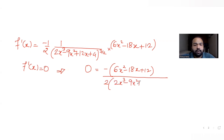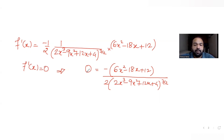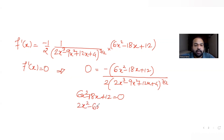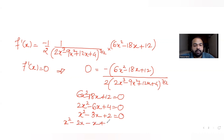Multiplying both sides by the denominator, only the numerator needs to equal zero. So 6x² minus 18x plus 12 equals 0. Taking 3 common gives 2x² minus 6x plus 4 equals 0, then taking 2 common gives x² minus 3x plus 2 equals 0.